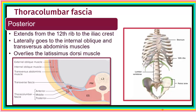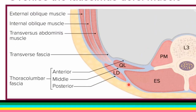We'll start with the posterior layer, which extends from the 12th rib to the iliac crest. Laterally it runs to the internal oblique and the transversus abdominis muscle. So the posterior layer extends to these two muscles — the transversus abdominis and the internal oblique.